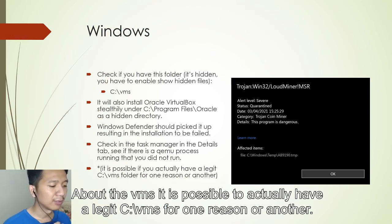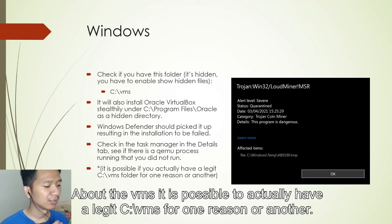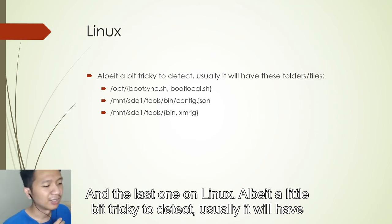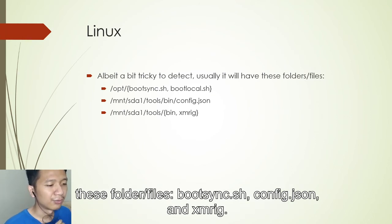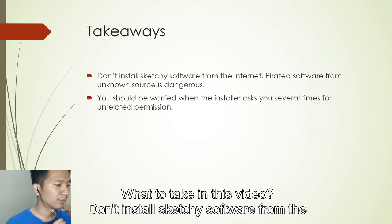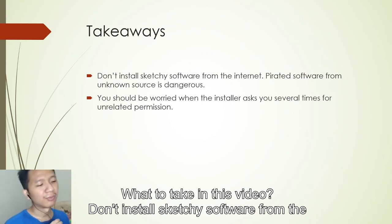Note: it is possible to have a legitimate C:\VMs folder for other purposes, so use context. On Linux, although it's a little tricky to detect, it will usually have folders or files such as putsync.sh, config.json, and xmrig. Those are the key artifacts to look for on Linux.